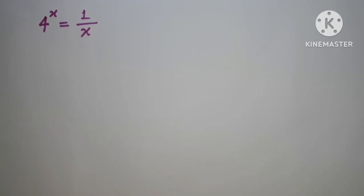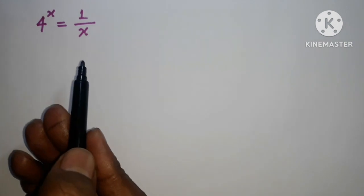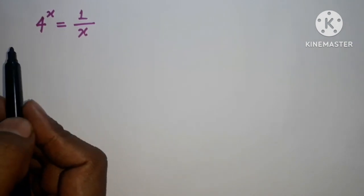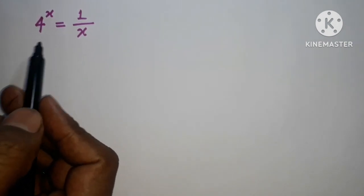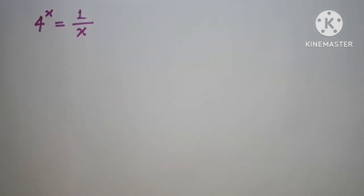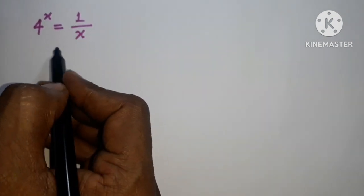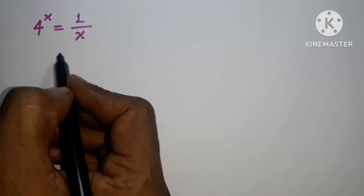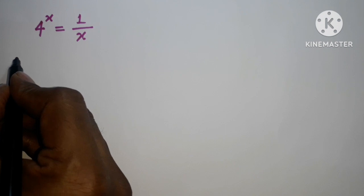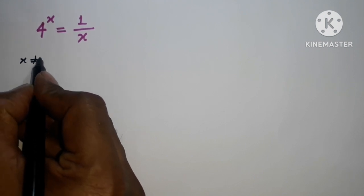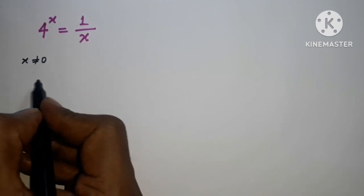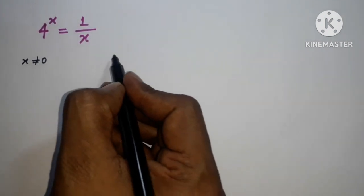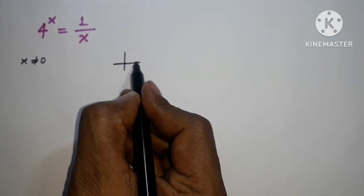Welcome back to Triple X Learning. Today we have this question on your screen — we have to find the value for x so that we can satisfy this equation. We know that p by q is a rational number, so this value should not be equal to zero. We can say that x should not be equal to zero.